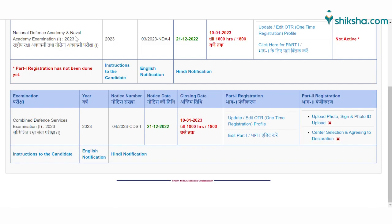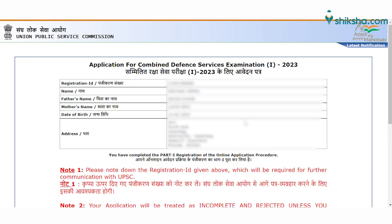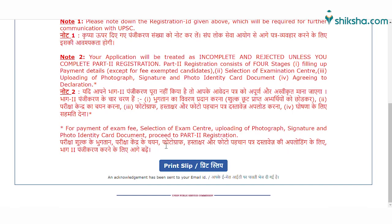After completing the Part 1 registration, move forward to the Part 2 registration. For this, you have to log back into your account and click on the Part 2 registration form. Click on upload photo, sign, and photo ID upload. After the application review, you will be forwarded to the application slip generated against your application form. Check your registration ID, note it down, and click on 'Print Slip' to save the application slip.